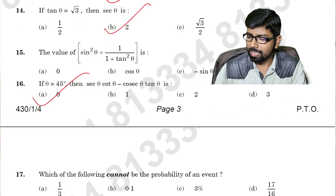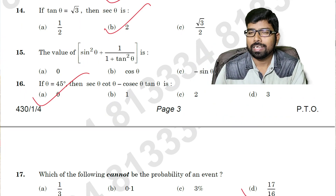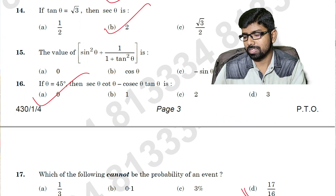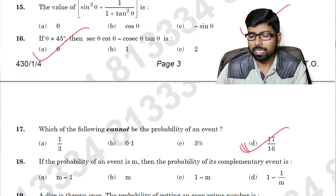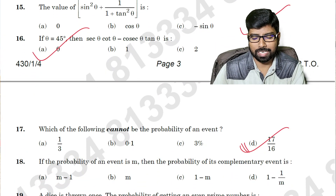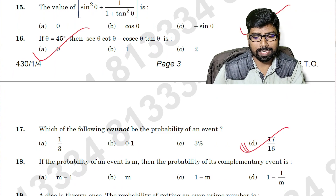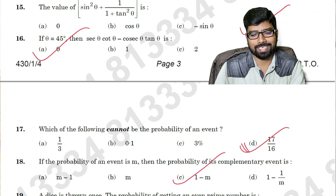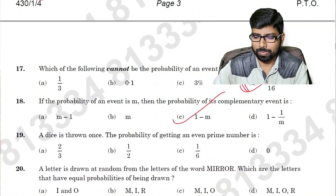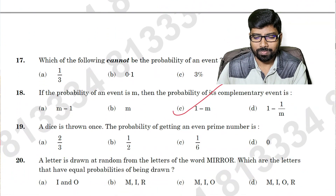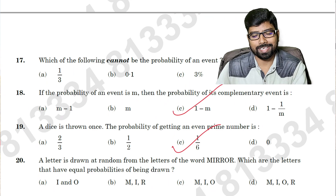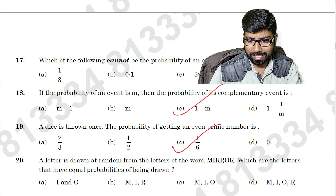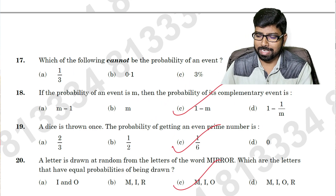Question number 17: option D is the right answer. Question number 18: option C is the right answer. Question number 19: option C is the right answer. Question number 20: also option C is the right answer.